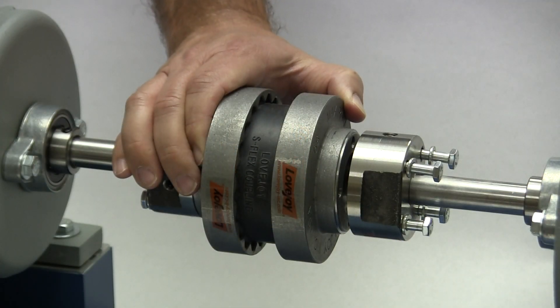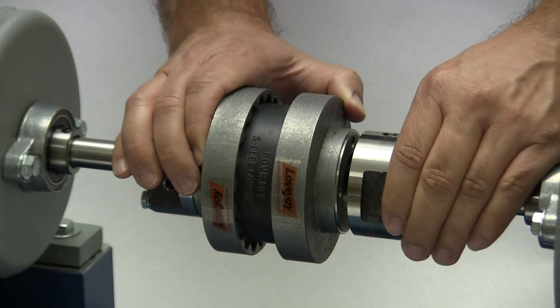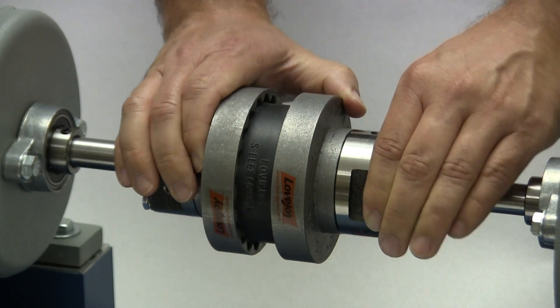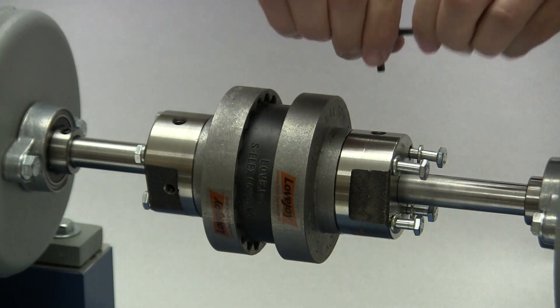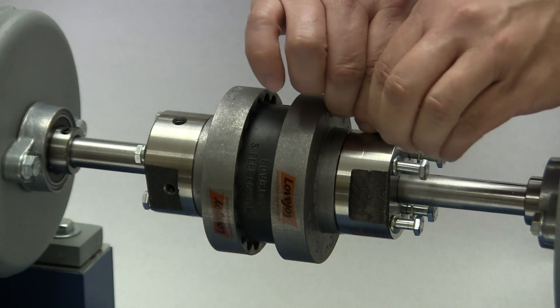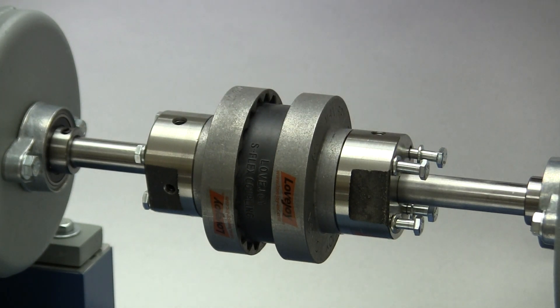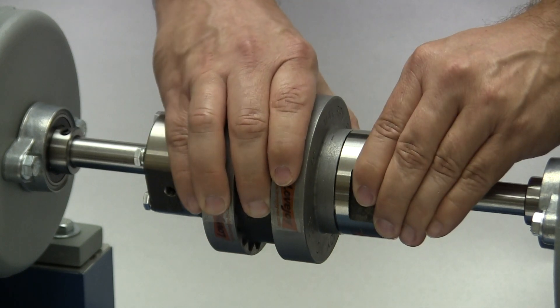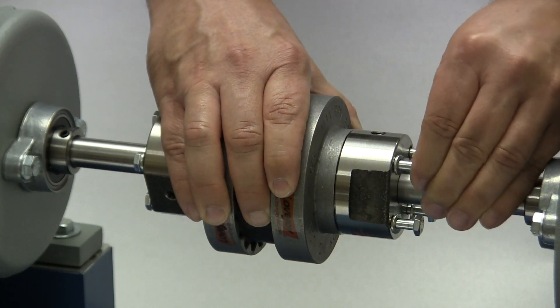Slide the second hub towards the sub-assembly so that the flange seats in the pilot on the hub. When snug, lightly tighten one set screw in this hub. Rotate the flange until the tapped holes in the flange line up with the bolts in the hub and hand tighten the spacer bolts.